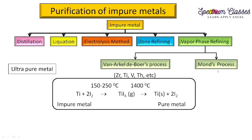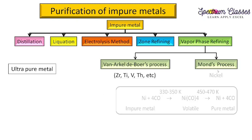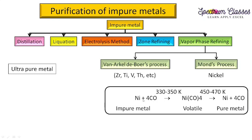The Mond process is applicable specifically to nickel. Impure nickel is reacted with a stream of carbon monoxide gas at 330–350 K to form nickel carbonyl, which is an organometallic compound. Nickel carbonyl is volatile in nature. On further heating, it decomposes into pure nickel and carbon monoxide. Through this method we obtain pure nickel metal.